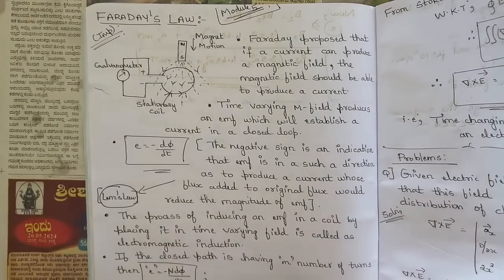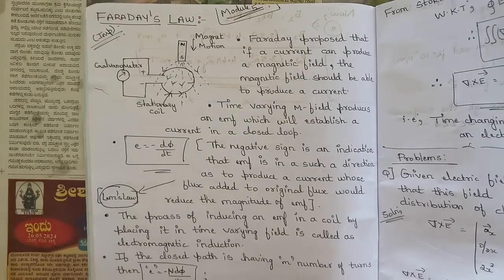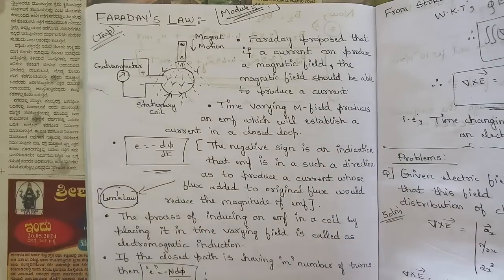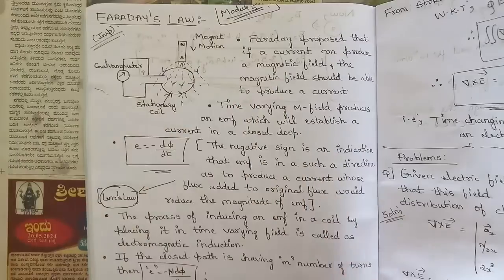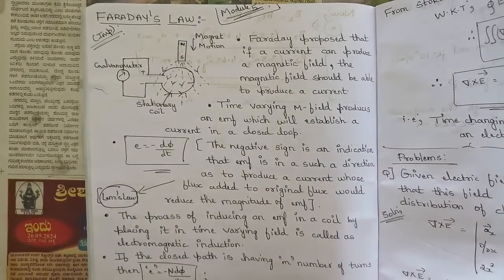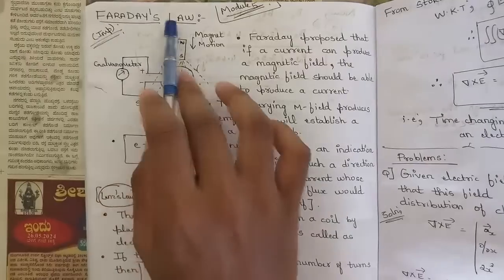Hello everyone, welcome to this new session. In the previous sessions of electromagnetic theory we covered four modules. Now we have only one module left, that is Module 5, which covers many concepts starting from Faraday's law of electromagnetic induction. Let's directly start the module — the first concept is Faraday's law.